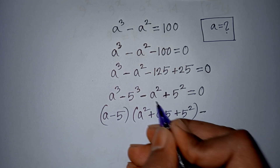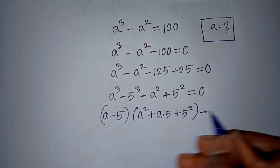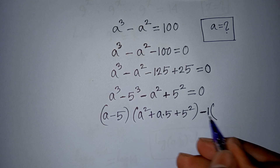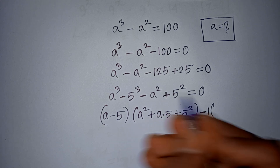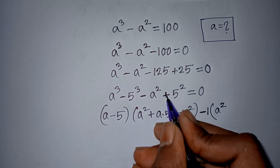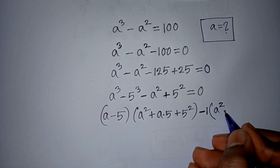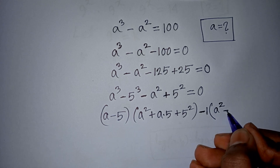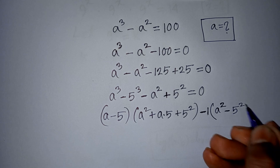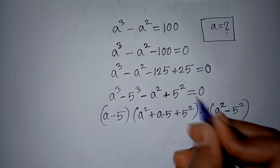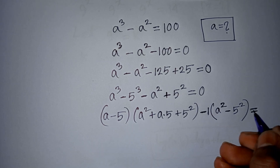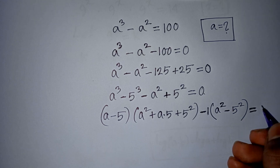Then, here take out common factor minus 1, so minus 1 is outside the bracket. This divided by this means it will be a², then plus 5² divided by minus 1, that means it will be minus 5². Bracket close is equal to 0.